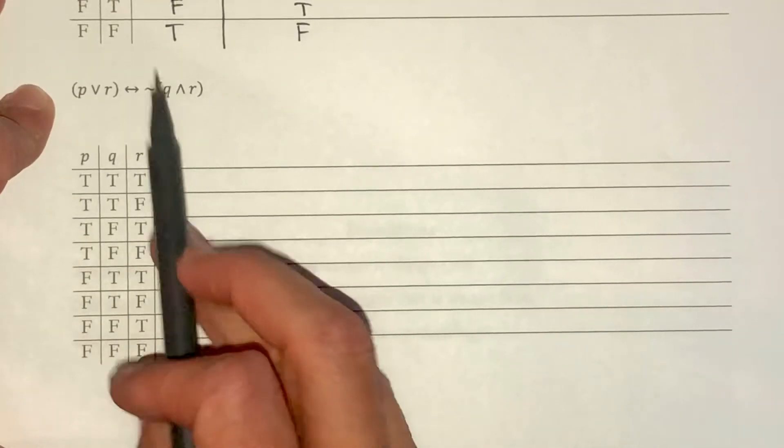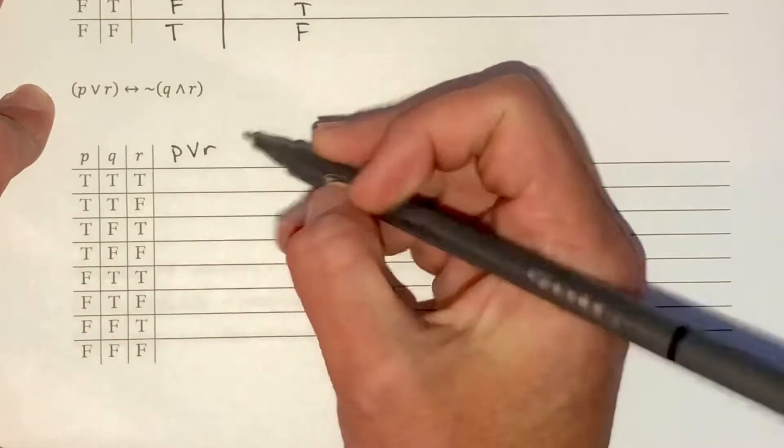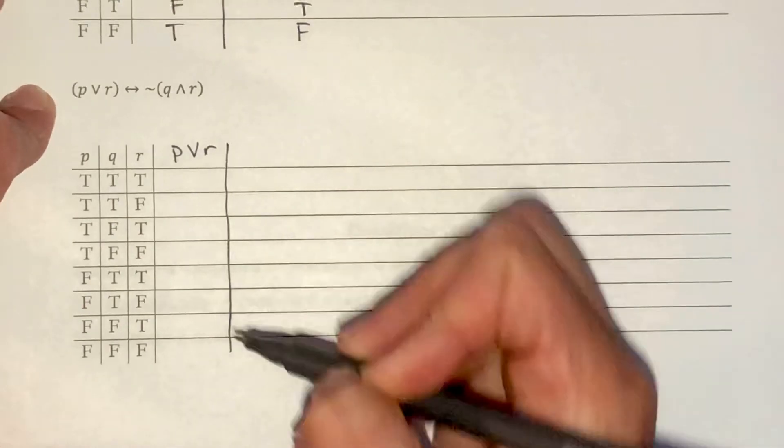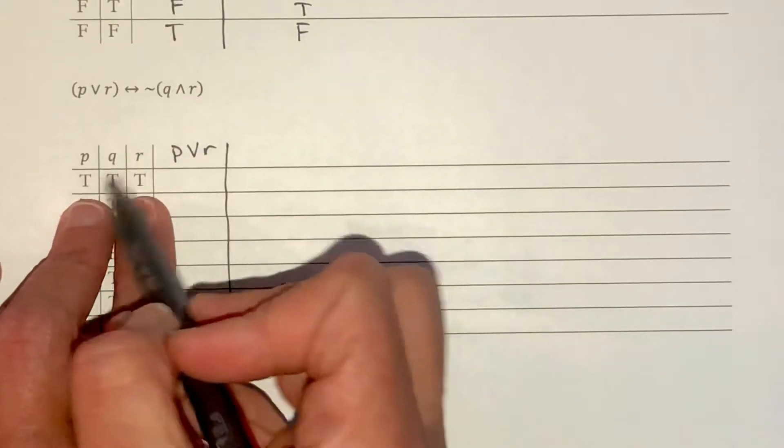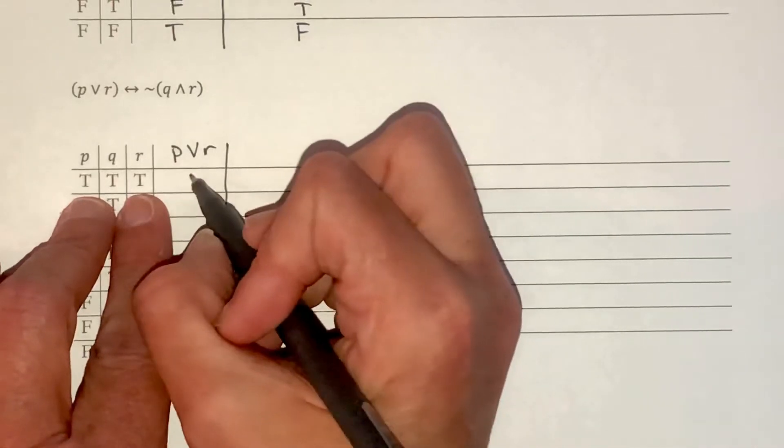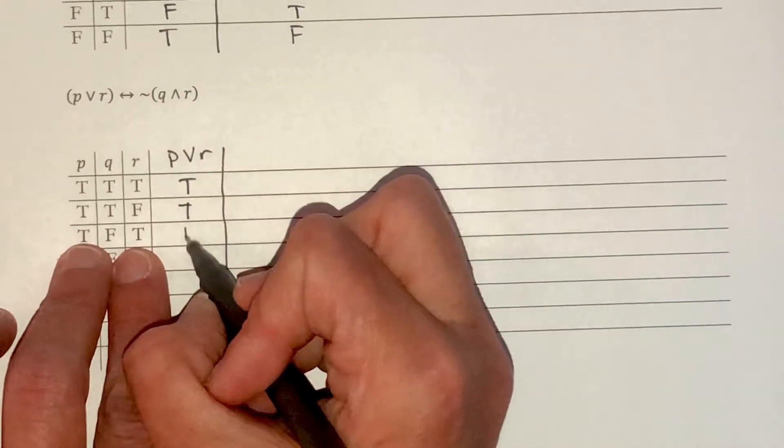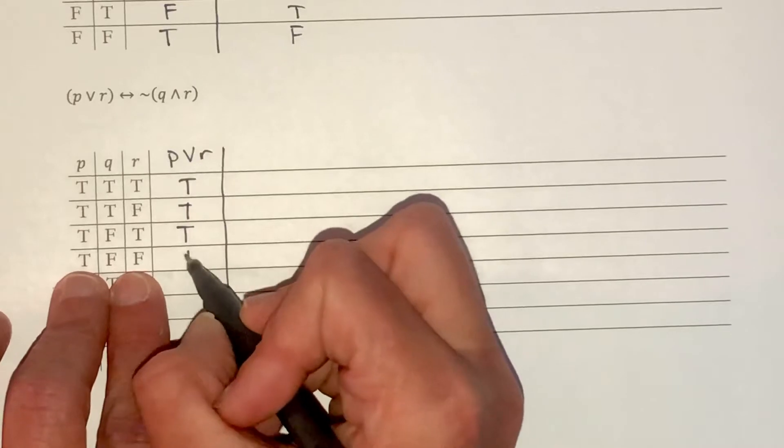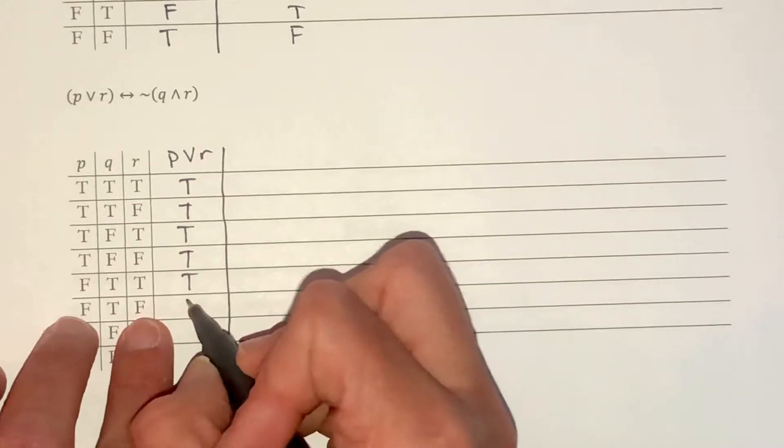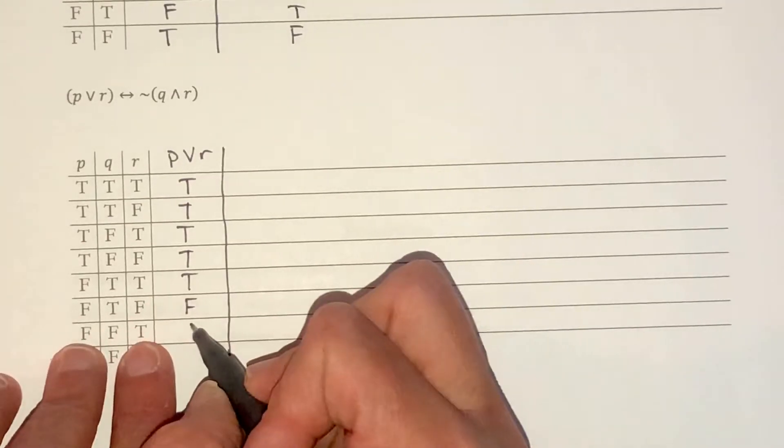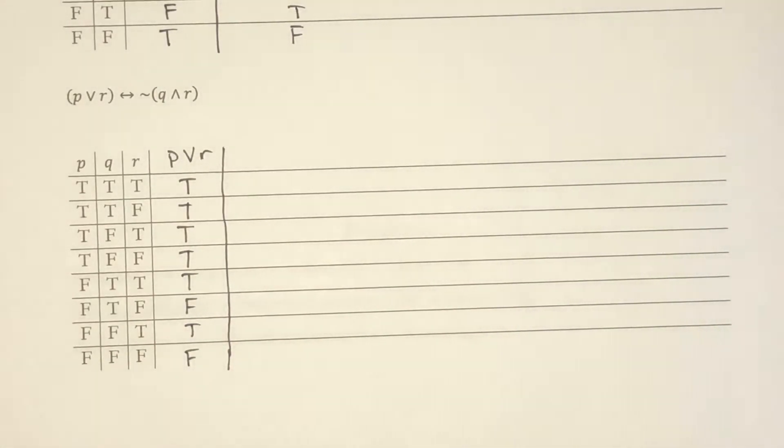I don't have a negation of a simple term here, so I'm going to jump right in to P or R. And if it's or, as long as I have a true statement, it is true. So I'm looking at P and R, the first column and the third column. True or true is true. True or false is true. True or true is true. True or false, that's true. False or true is true. False or false, that one's false. False or true is true. And false or false is false.